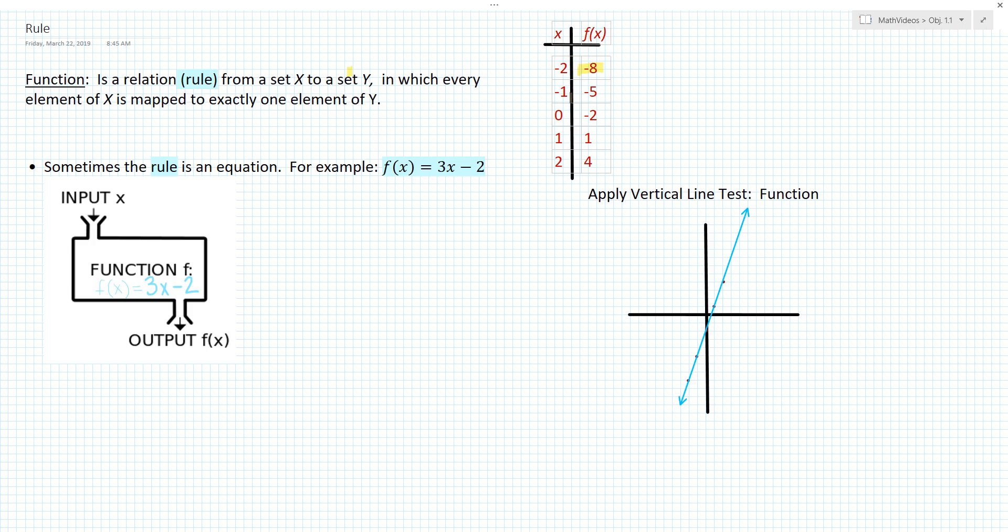We do the same. We take -1 as our input, triple it, subtract 2, and get -5. Take our input 0, triple it, subtract 2, we get -2.